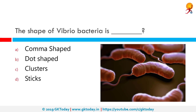The shape of Vibrio bacteria is? The correct answer is comma shaped. Vibrio is a genus of gram-negative bacteria possessing a curved rod shape, several species of which can cause foodborne infections usually associated with eating undercooked seafood.